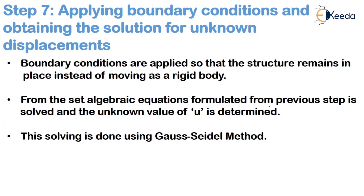Step seven is to apply the boundary conditions and obtain the solution for the unknown displacements. Boundary conditions are applied so that the structure remains in place instead of moving as a rigid body. From the set of algebraic equations formulated, the unknown value of U is determined — normally using the Gauss elimination method or Gauss-Jordan method.